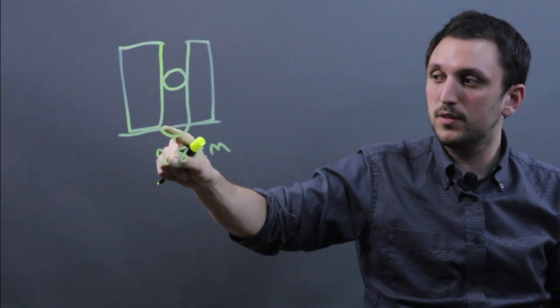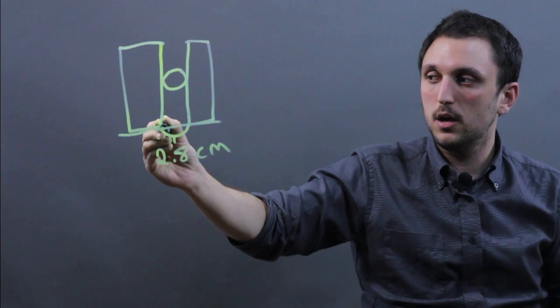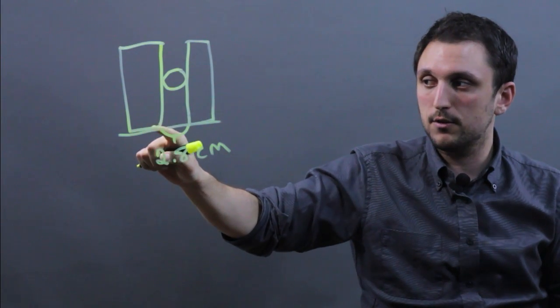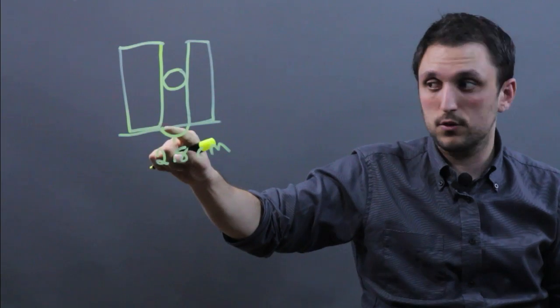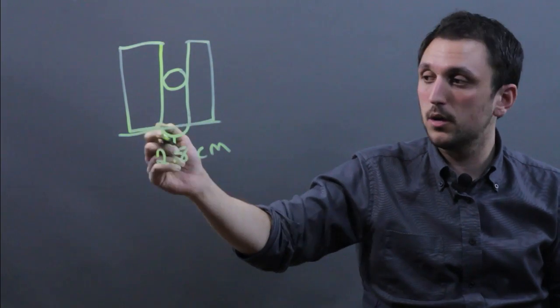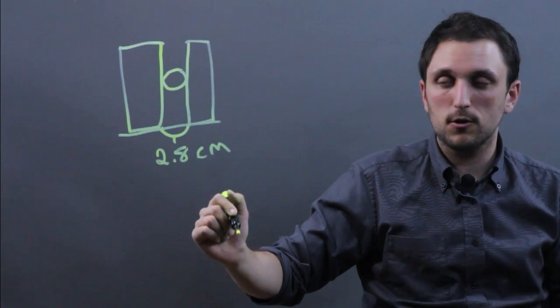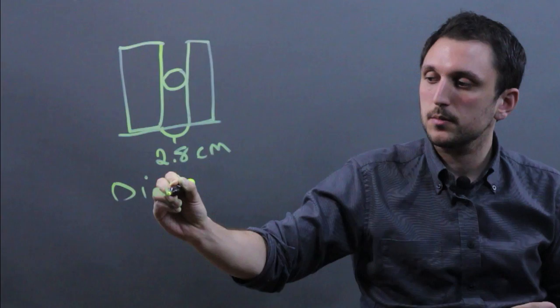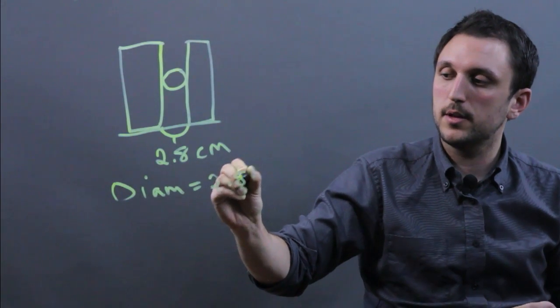Use a ruler, and remember to use the edge and not, say if there's a hardcover to the book, don't start from the edge of the cover. The inside cover, start from the edge of the outside of the cover. So we have 2.8 centimeters, and that means that the diameter equals 2.8 centimeters.